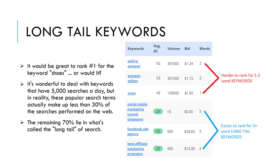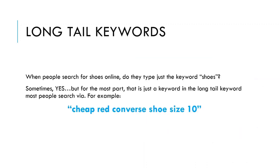There's a great long tail keyword. These are longer keyword phrases that, yes, are searched less than the keyword shoes alone. But these long tail keywords are easier to rank for in Google. Think about long tail keywords for a second — when people search for shoes online, do they just type in the keyword shoes? Sometimes yes, but for the most part, that is just one keyword from the long tail keyword most people search for.